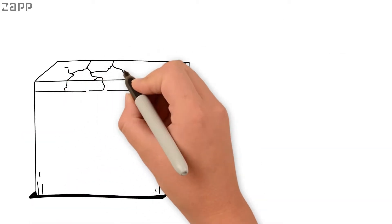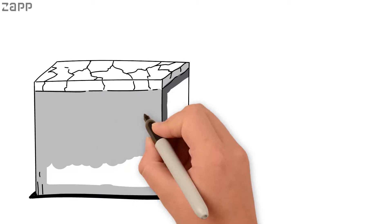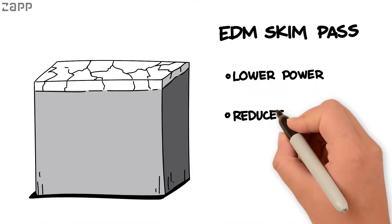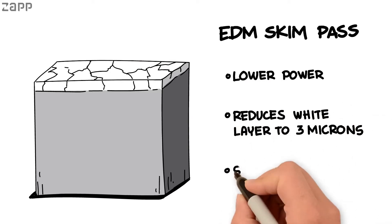As EDM technology improves, white layer can be reduced by using lower energy skim cuts. These passes can reduce the white layer from 30 microns to 3 microns after 3 to 4 skim cuts.